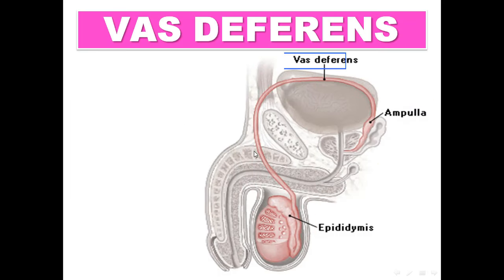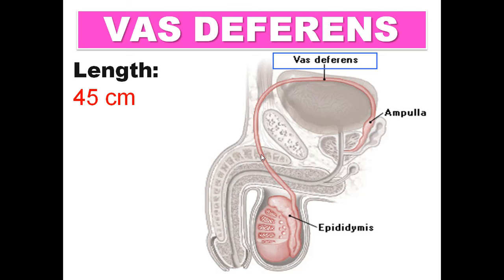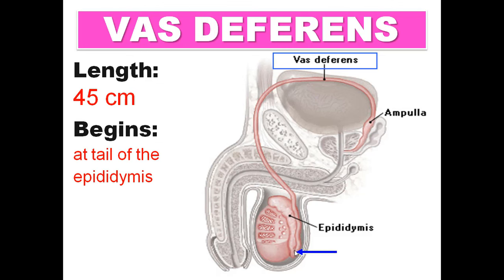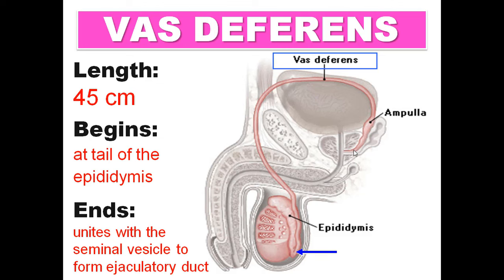The vas deferens is 45 centimeters long — similar to the length of the spinal cord and the femur bone. It begins at the tail of the epididymis and terminates by uniting with the duct of the seminal vesicle to form the ejaculatory duct.